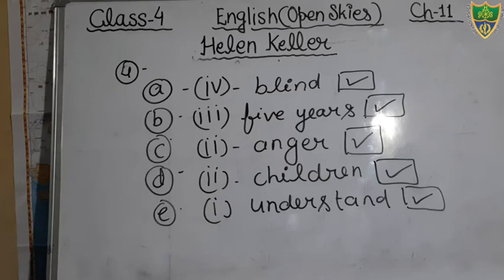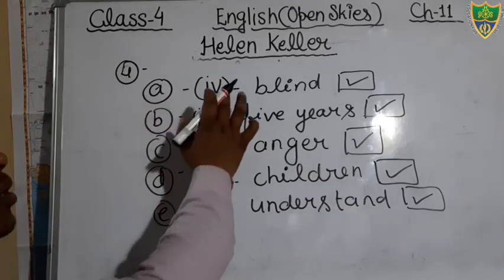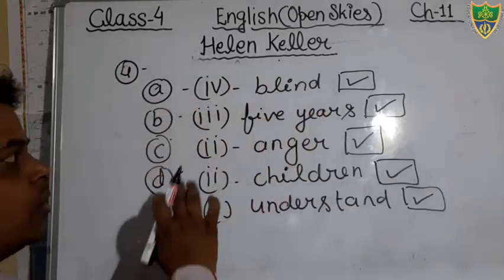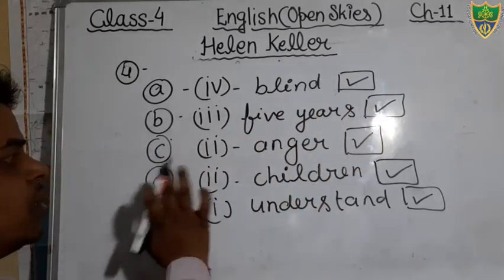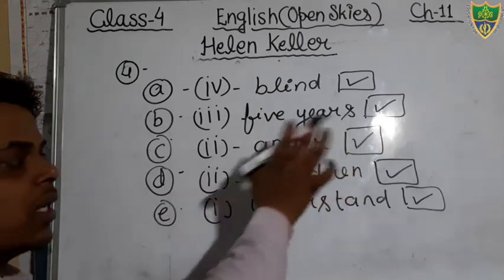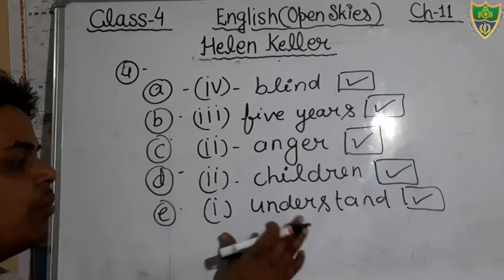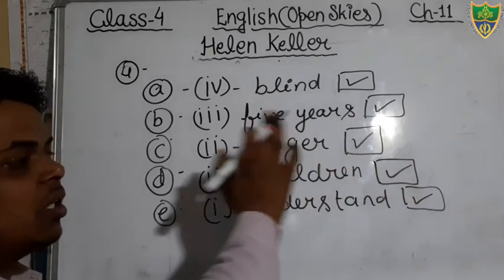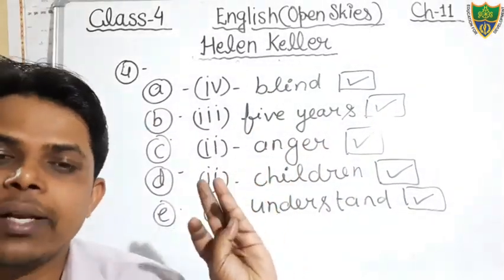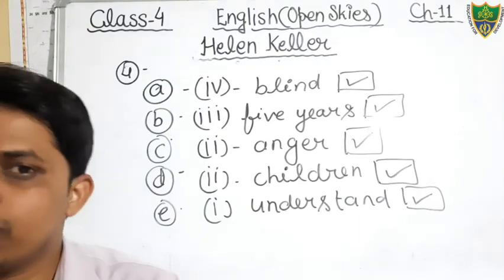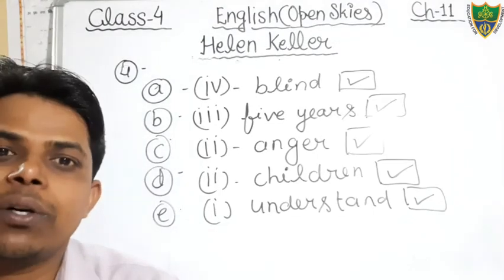So these are the exercises you have to complete in your book. For the multiple choice questions: question A — option 4, blind; question B — option 3, 5 years; question C — option 2, anger; question D — option 2, children; question E — option 1, understand. In this way, we have completed the learning words, true/false, filling the blanks, and multiple choice questions given in the chapter. If you have any problem, you may ask. That's all for today, thank you.